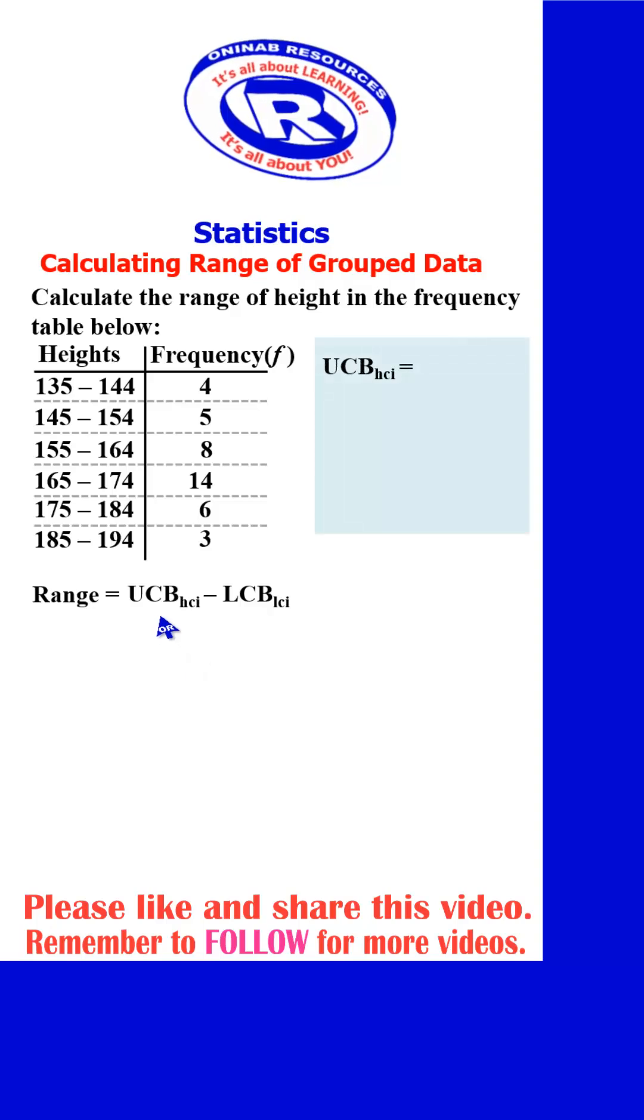We start with the upper class boundary of the highest class interval. Since the intervals are arranged in ascending order, the highest class interval here will be the last class interval.